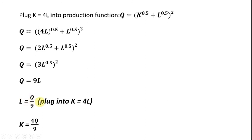Taking the result L equals Q divided by 9 and plugging it into the K equals 4L equation, we get K equals 4 times Q divided by 9, so K equals 4Q divided by 9.